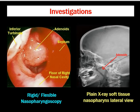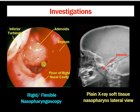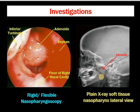To investigate for adenoids, we perform rigid or flexible nasopharyngoscopy, which shows the adenoid tissue. Here we can see the adenoids, the inferior turbinate, the upper structures, the septum, and the floor of the right nasal cavity — the adenoid tissue causing obstruction of the airway at the choana, with more than 50% of the airway closed. A plain X-ray of the nasopharynx, lateral view, will also show enlarged adenoids causing obstruction to the nasal airway.